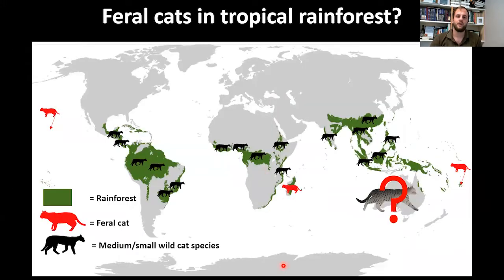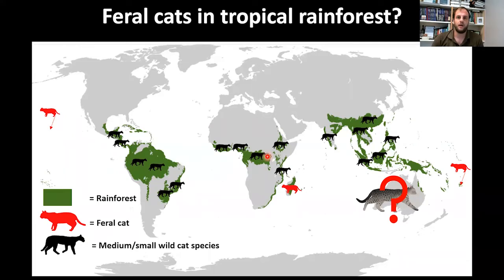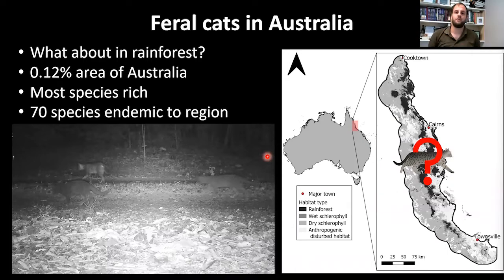Taking a global step back, almost every tropical rainforest in the world has an extant medium or small wildcat species, and feral cats have established themselves in island rainforests such as Fiji, Madagascar, and Hawaii. This led me to ask: why should Australia be any different? If every other rainforest is suitable for cats, why would they not establish in Australian rainforest?